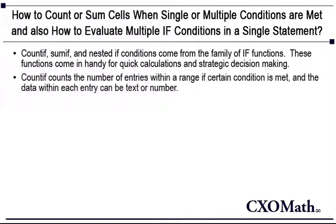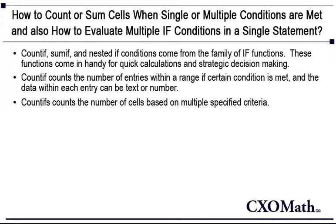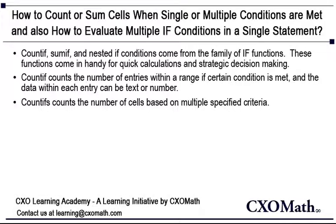The COUNTIF function is a specialized form of a formula which is great when you have a single condition. It is a function that will count the number of entries within a range if a certain condition is met, and the data within each entry can be text or number. It does not work well when you have multiple criteria. The function COUNTIFS has been introduced to counter this problem — COUNTIFS counts the number of cells based on multiple specified criteria.